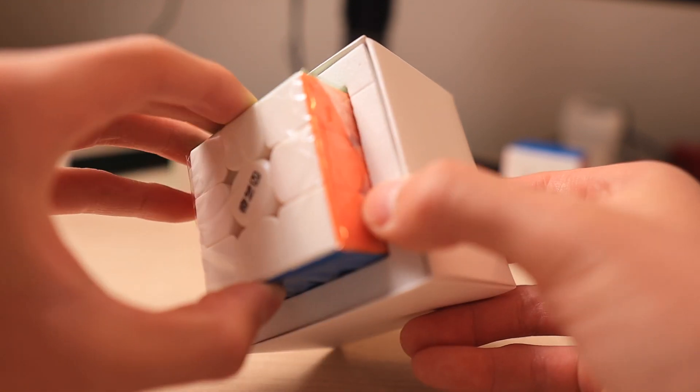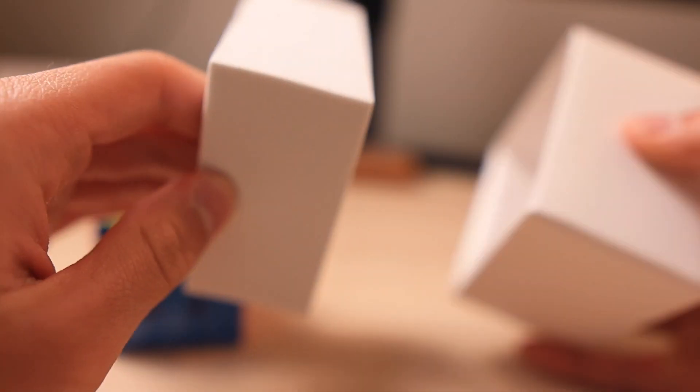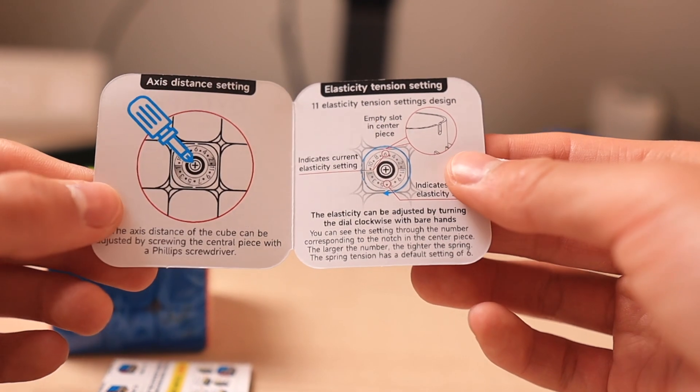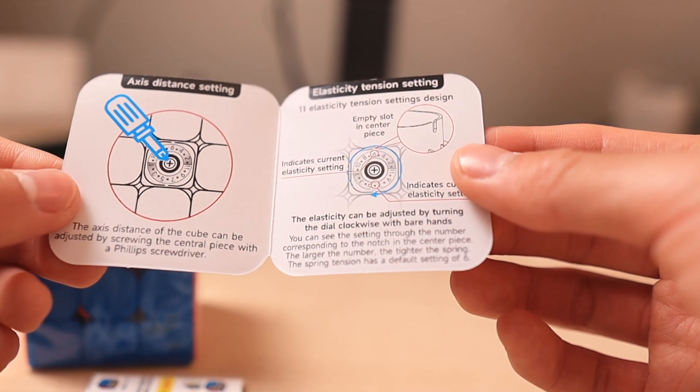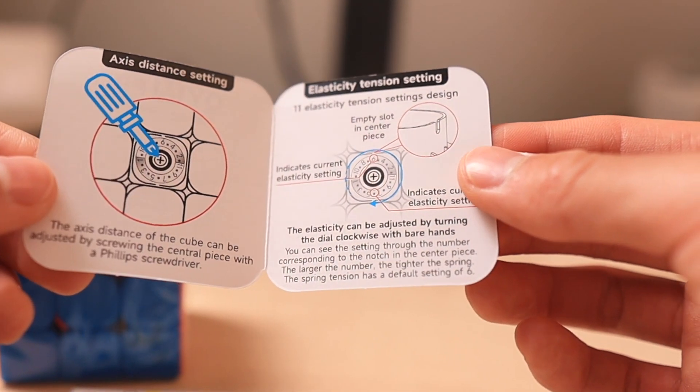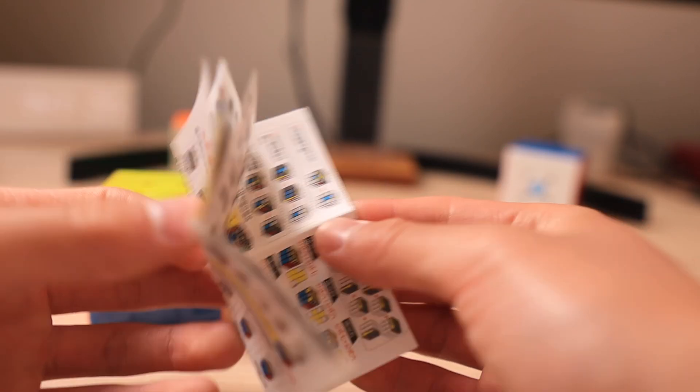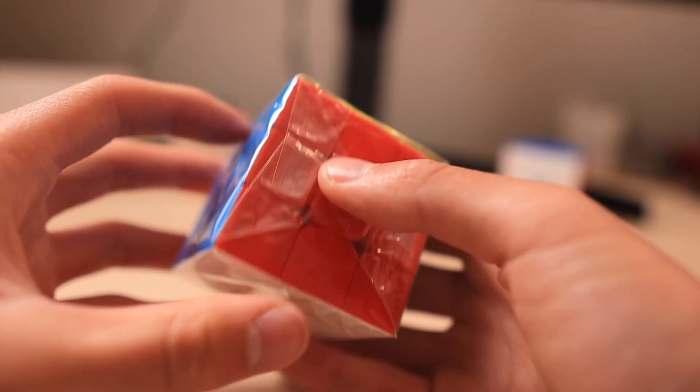That is a nice cube. This is like a foam mesh check-through. Kind of cool. So inside, you get the settings instructions, and this is where you can see the axis distance setting and the elasticity tensioning system. This is really useful if you're not used to how cubes are manufactured nowadays. And there's also a nice pamphlet that shows you how to solve the cube. Here's the 3x3 itself.